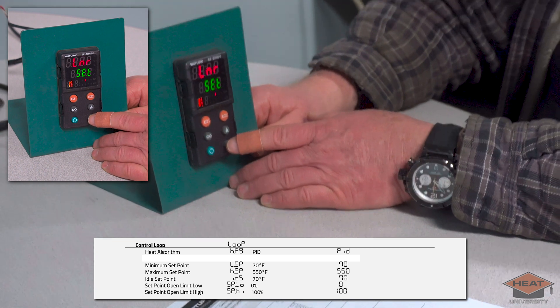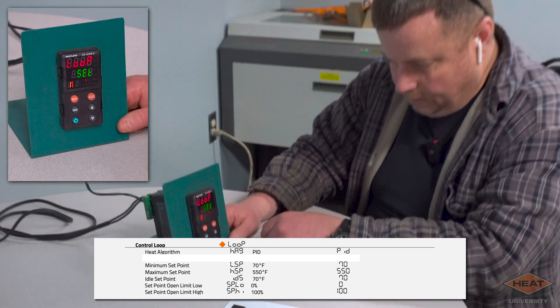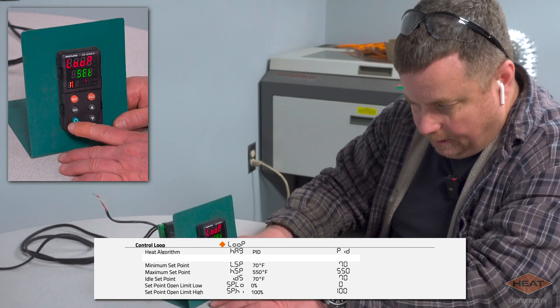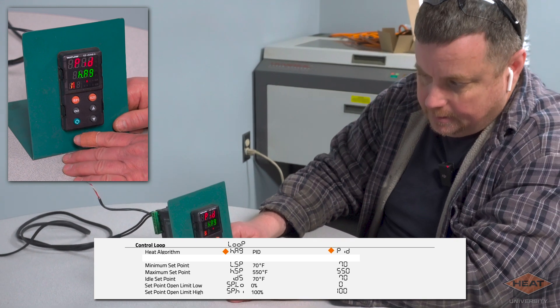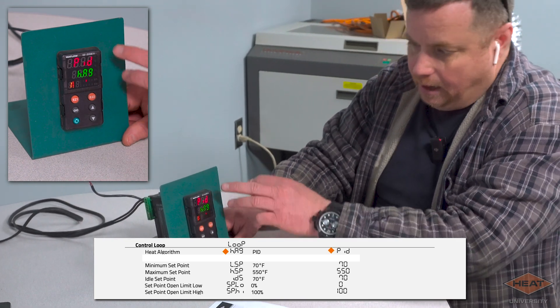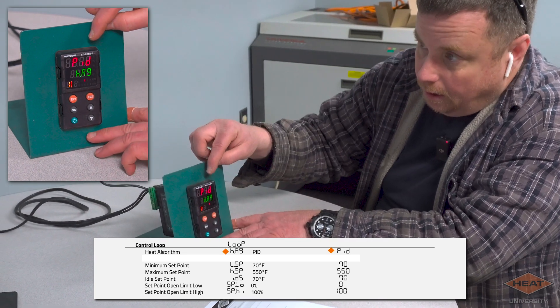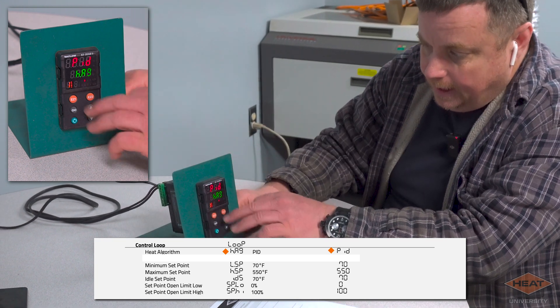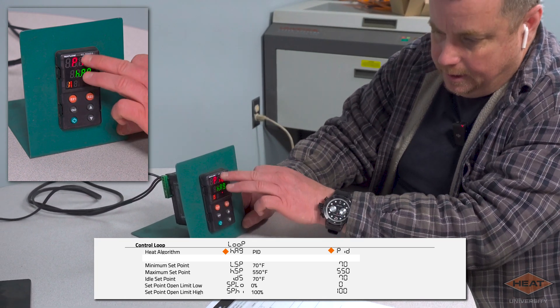Then our next one is control loop, so we're going to go to where we see loop. And there's loop. Now we're going to hit our cycle button and you can see our loop control is PID and that's our heating algorithm, PID.